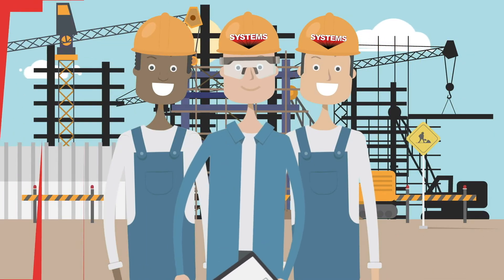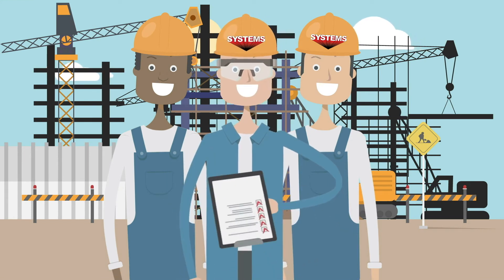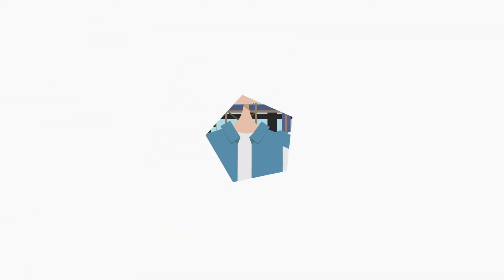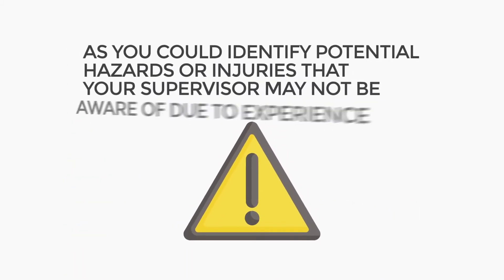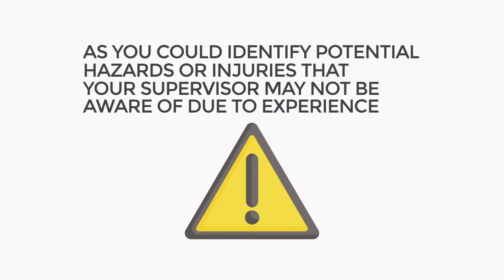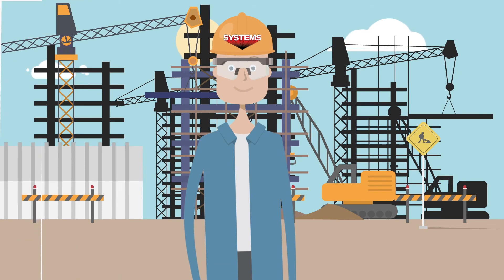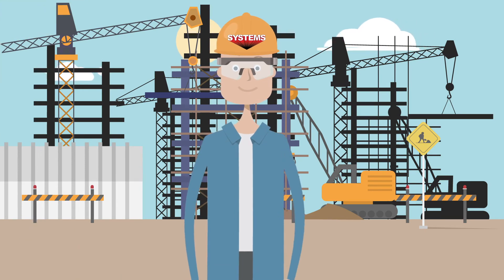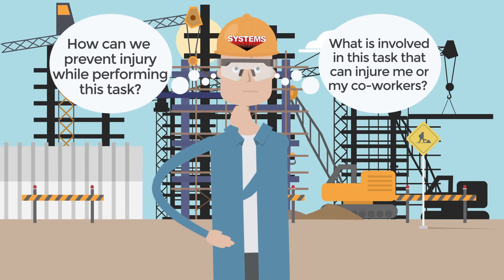Let's explore how JHAs are performed at Systems. Supervisors or employees who have completed JHA supervisor training complete the JHA paperwork. This is done with all employees' involvement, as you can identify potential hazards or injuries that your supervisor may not be aware of due to experience. Your input is vital for JHAs. A Job Hazard Analysis makes you ask two questions: What is involved in this task that can injure me or my co-workers? And how can we prevent injury while performing this task?